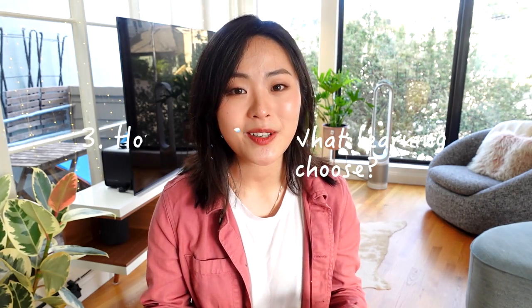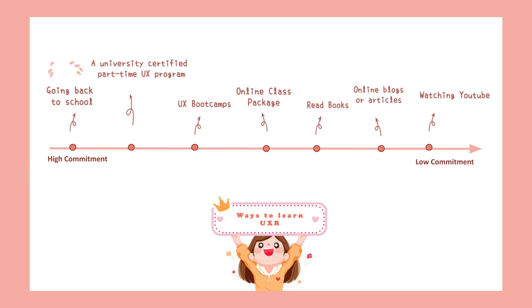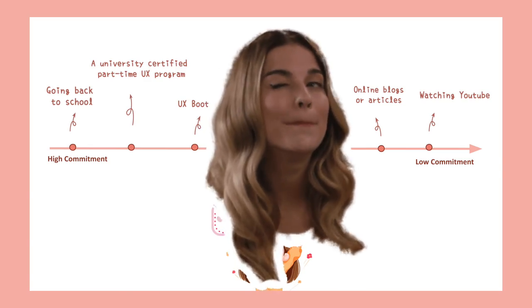I researched and categorized all learning resources into seven buckets ordered from highest to lowest commitment: going back to school full-time for a higher degree; signing up for a university UX research certificate program; a UX research boot camp; an online class package at your own pace; reading books; reading free online articles or blogs; and watching YouTube videos. Commitment refers to time commitment, money commitment, and how each resource will actually help you get a job.